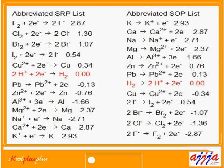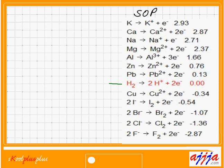You can see the SRP list and SOP list. I used SOP — on the left-hand side, zinc is negative 0.76, but on the right-hand side (SOP), zinc is positive 0.76. Hydrogen has zero potential. If you use potassium, that's 2.93. What about calcium? That's 2.87.